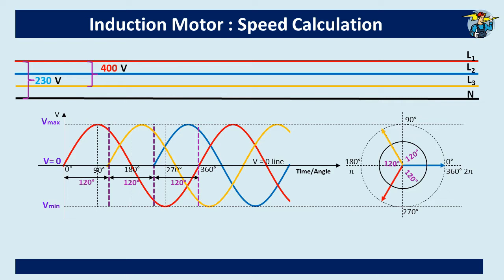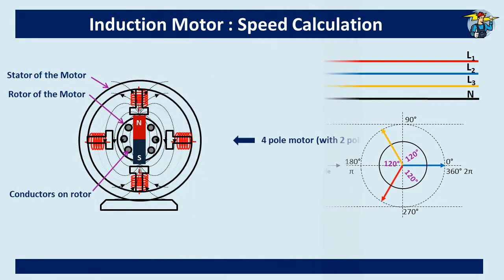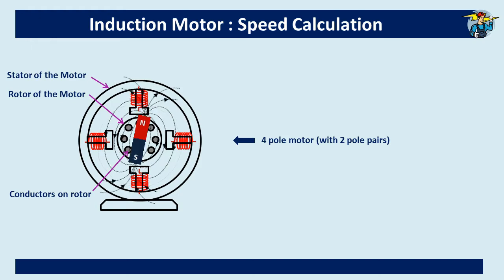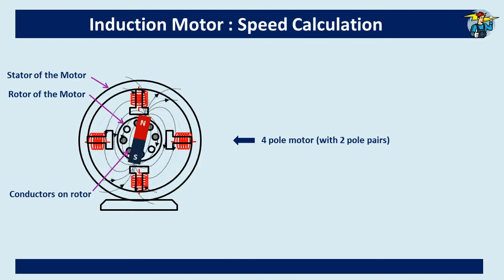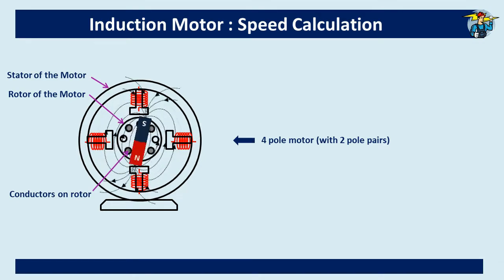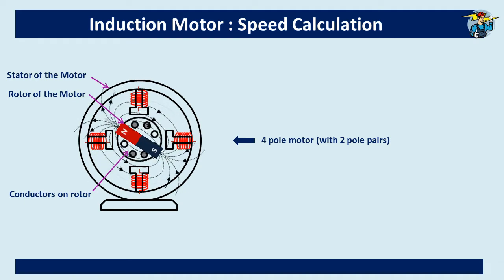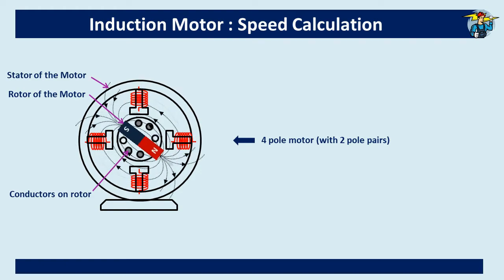When the conductors on the rotor cut the magnetic flux of the rotating magnetic field, current is generated on the conductors. This current produces torque, which is a rotating moment, and acts perpendicular to the conductors on the rotor. The result is that the rotor starts rotation and follows the rotating magnetic field in the same direction.